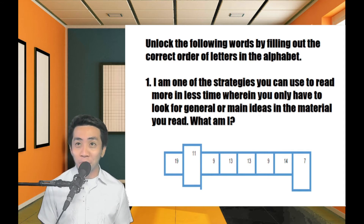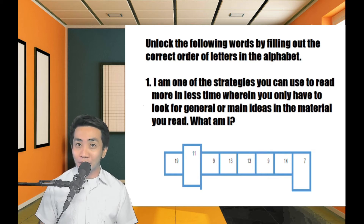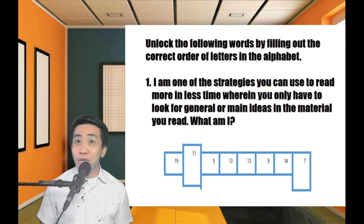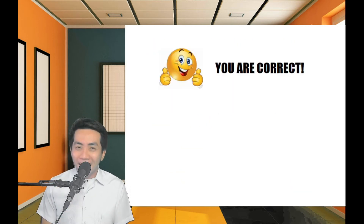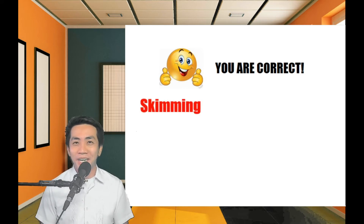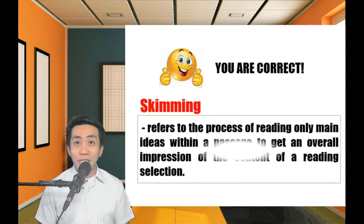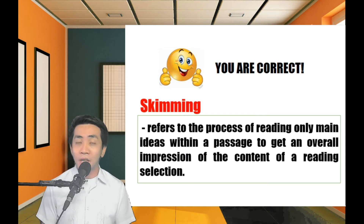Let's unlock the following words by filling out the correct order of letters in the alphabet. Number one: I am one of the strategies you can use to read more in less time, wherein you only have to look for general or main ideas in the material you read. The answer is skimming. Skimming refers to the process of reading only main ideas within a passage to get an overall impression of the content of a reading selection.